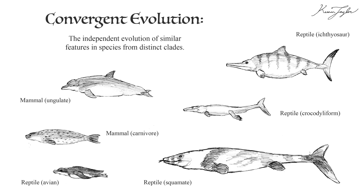Several clades of reptiles and mammals have all evolved from dramatically different ancestors to a fish-like body plan. A fluked tail, stabilizing pectoral fins, and a smooth body are all attributes independently evolved by these distinct groups. When faced with the same pressures, organisms will often naturally select the same solution.